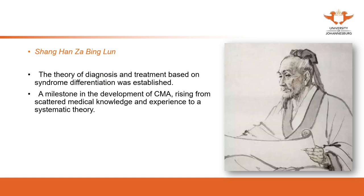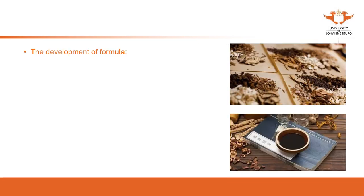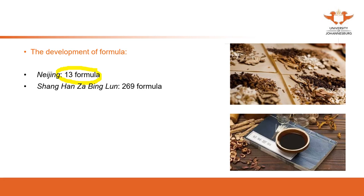Dr. Zhang Zhongjing, the author, was considered the sage of medical doctors due to his significant contributions to Chinese medicine. The development of formulas can be seen from the numbers: the Huangdi Neijing, focused on theory, recorded only 13 formulas, while the Shanghan Zabing Lun recorded 269 formulas — a remarkable development over 600 to 700 years.